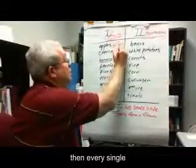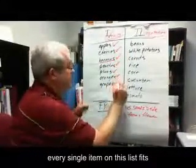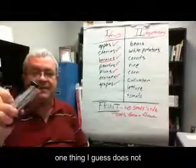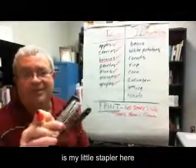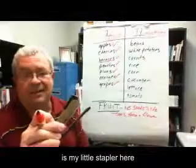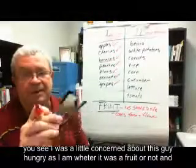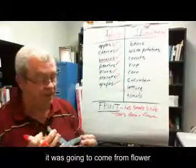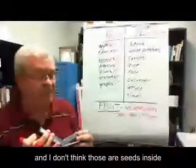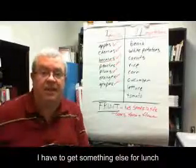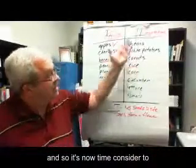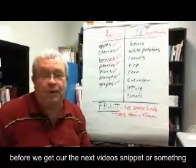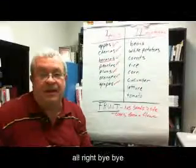Then every single item on this list fits this definition and is a fruit. One thing that does not is my little stapler here — I was a little concerned about this guy, being as hungry as I am, whether it's a fruit or not. But I'm pretty sure this guy didn't come from a flower, and I don't think those are seeds inside, so I have to get something else for lunch. It's now time to consider list number two — let's go back to the lesson and read a little bit before we get our next video snippet.